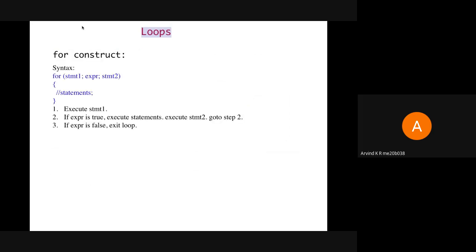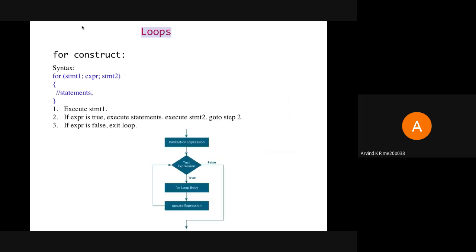Next is the for loop construct. We use the keyword for, and within parenthesis we mention three things: statement one (the initialization statement), the expression (the condition), and statement two (the update statement). As shown in the flowchart, first the initialization statement gets executed, then the expression gets checked. If the expression is satisfied, the statements get executed once, then the update statement gets executed. After that, the expression is checked again. This repeats as long as the expression remains true.